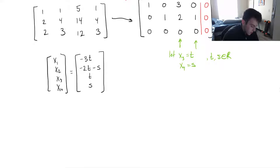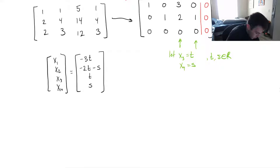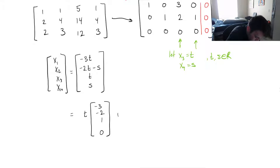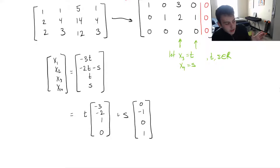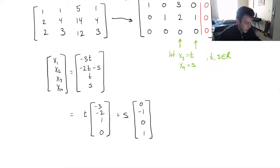We need to get this into the form of a set of all vectors. We can break this up: t multiplied by the vector (-3, -2, 1, 0) plus s multiplied by the vector (0, -1, 0, 1). This is the exact same thing — we just broke it up. You can see this is very similar to the form of a linear combination. Instead of c1 and c2 we have t and s, but they're both constants so it means the same thing. This is just the span of these two vectors.